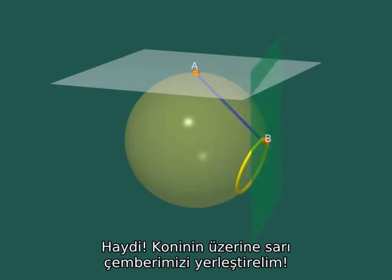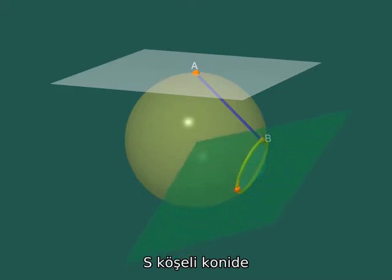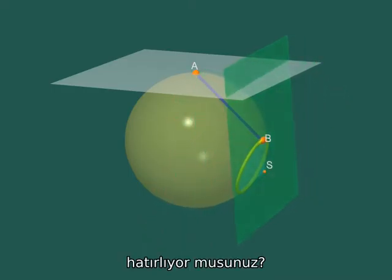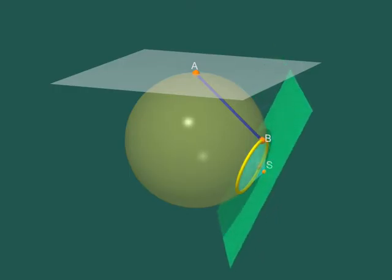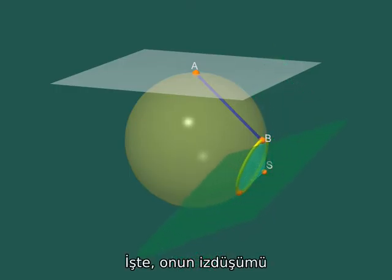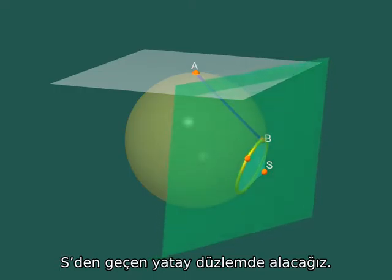Well, let's place our yellow circle in a cone. Remember? The ball of ice cream in a cone with vertex S. Well, we're going to project onto the horizontal plane through S.